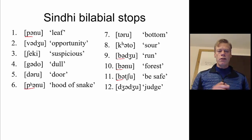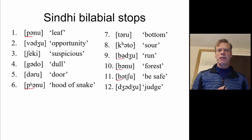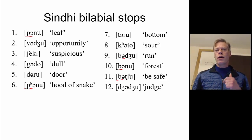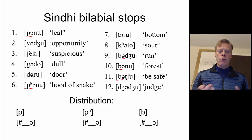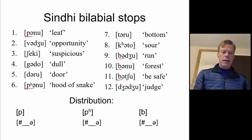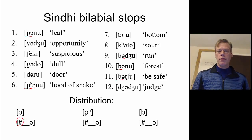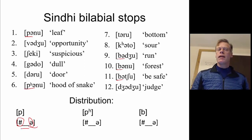Now that we've identified the words that have those sounds, we want to look at the environment. By environment we mean, in this case at least to start with, the immediate environment — what comes immediately before the sounds and what comes immediately after. So we simply write down where they occur. For number one, we see that the P comes at the beginning of a word — that's what that pound symbol means — and immediately before a schwa. This little line here means that's where our target occurs, in this case the P.